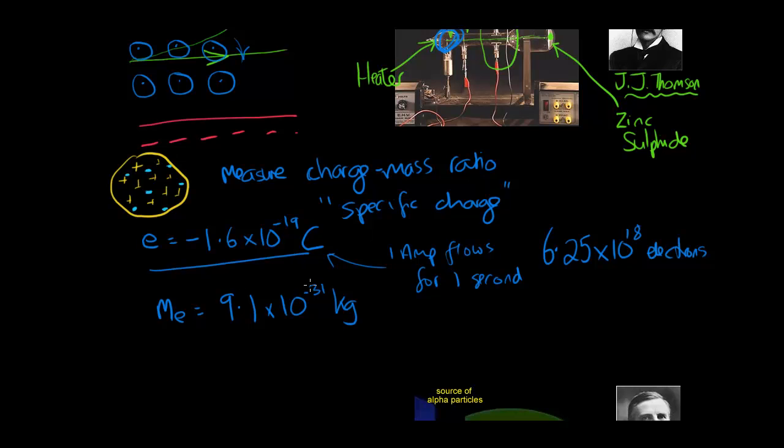By the way, if you want to find the specific charge of an electron, guess what you do? Very simple. Divide the charge by the mass. So the specific charge of an electron turns out to be 1.76 times 10 to the 11 coulombs per kilogram. Whenever you see that word specific, it just means per kilogram.